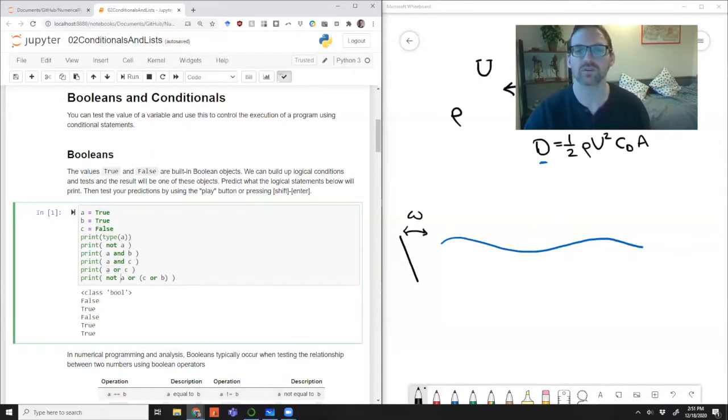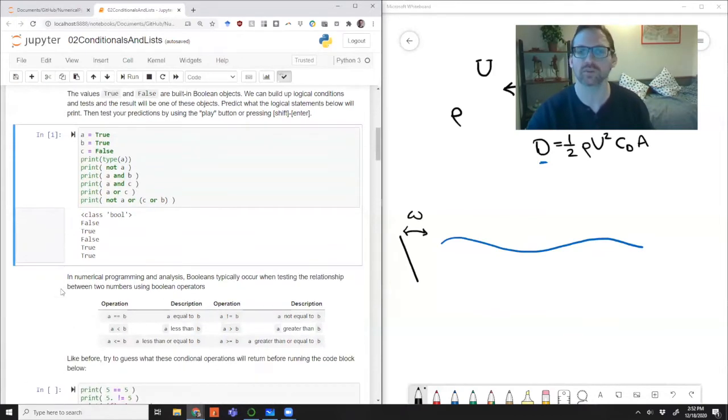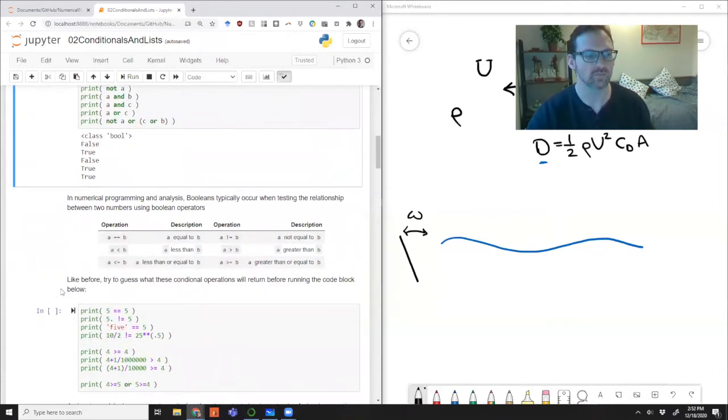And then this last one, whenever you're dealing with logical statements, just like arithmetic, you should go inside the parentheses first, right? So C or B, then B is true. So that means this part is true. Not A, that was false, but this is true, so the or should return true, and it does. So hopefully that's all pretty straightforward Boolean logic.